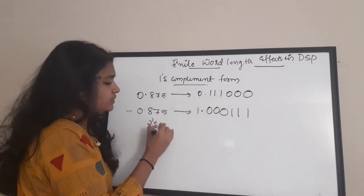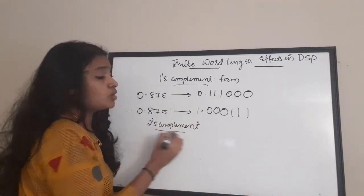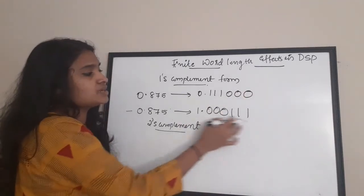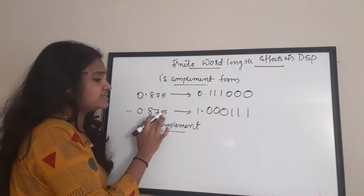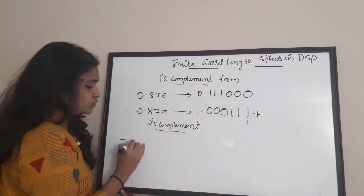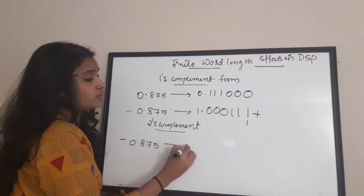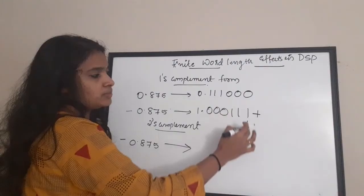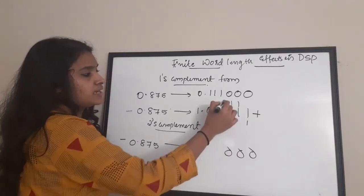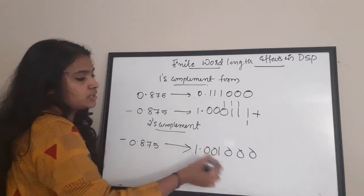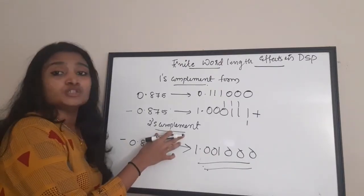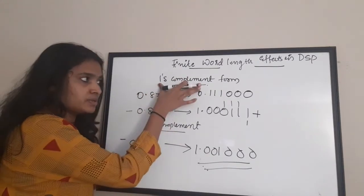In the two's complement format, just a small change is there: add a 1 to the LSB bit of the one's complemented form. So minus 0.875 in one's complement is 1.00011. To convert it to two's complement format, add 1 to this: 1 plus 1 is 0 carry 1, again 1 plus 1 is 0 carry 1, again 0 carry 1, resulting in 1.00100. This is the representation of minus 0.875 in two's complement format.